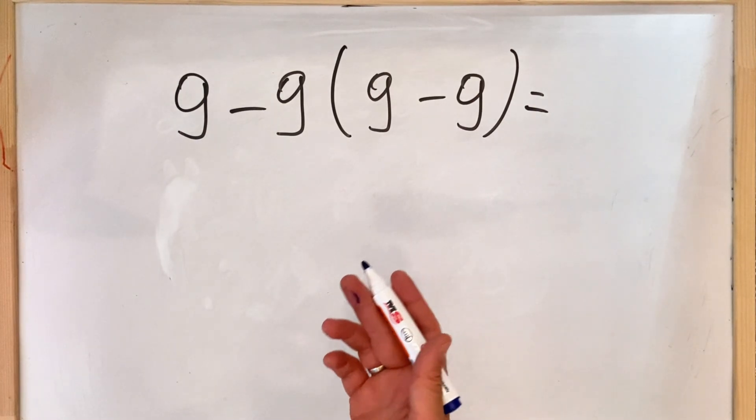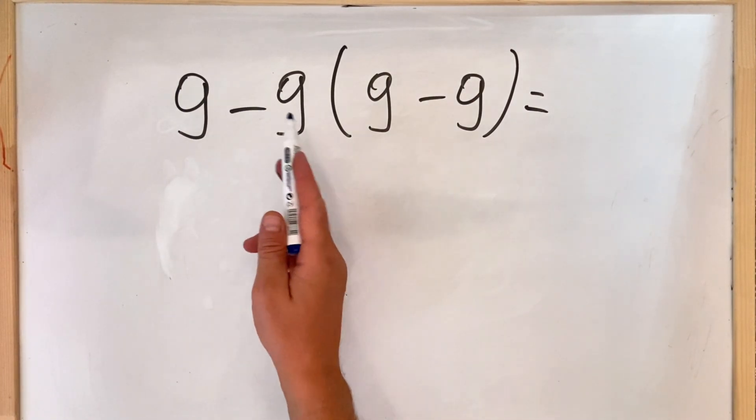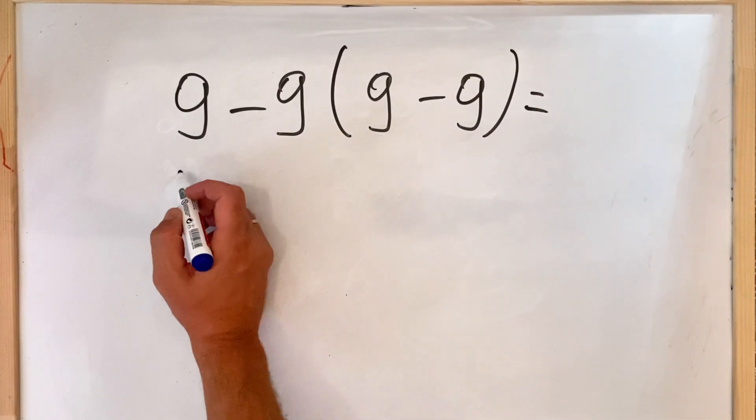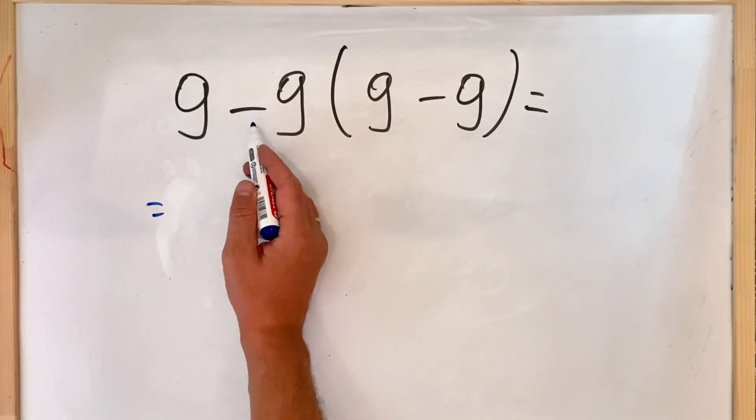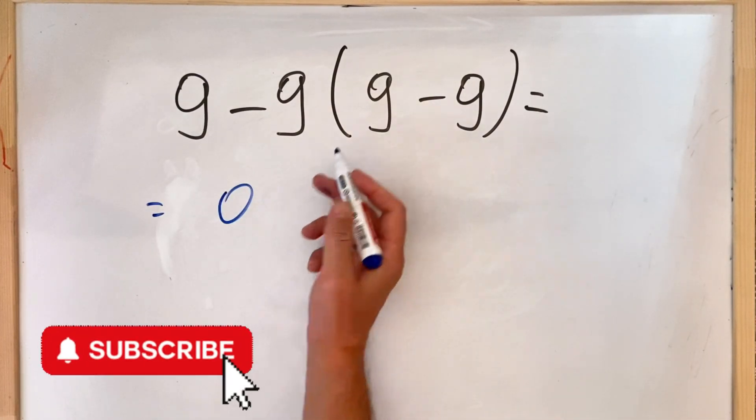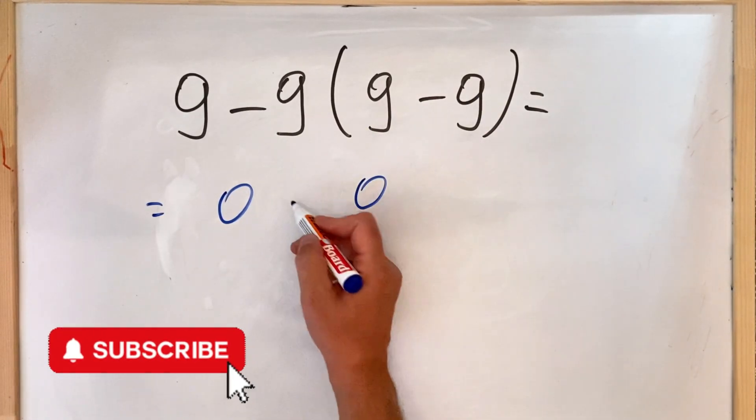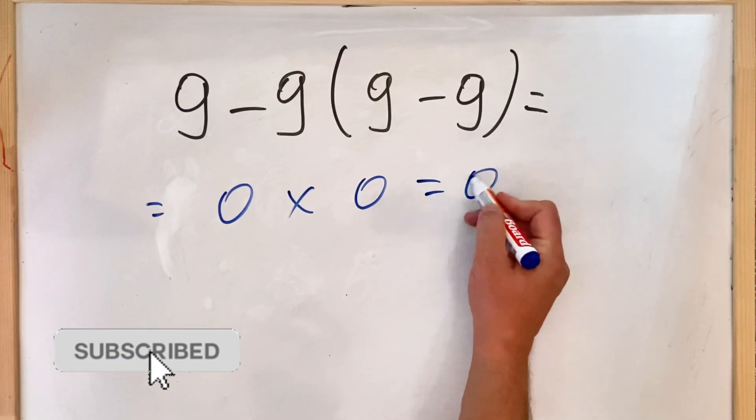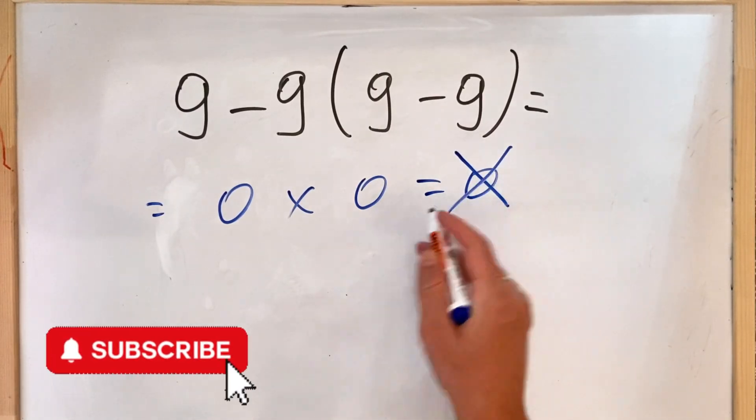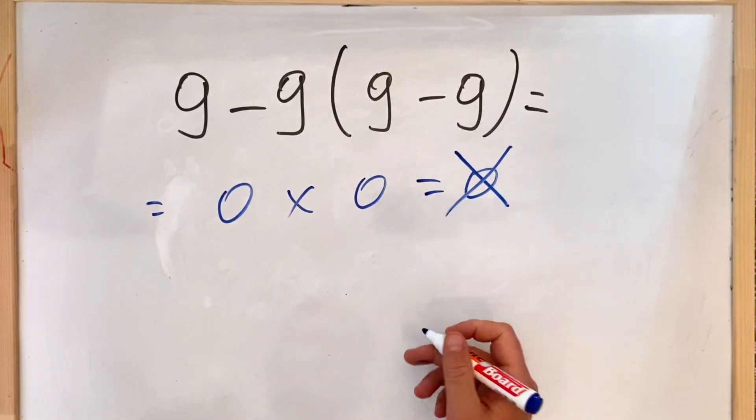Hello everyone. Many people when they see such an equation try to group the left side and the right side of the equation. So they do 9 minus 9 which equals 0, and they do 9 minus 9 which also equals 0. Then they try to do the multiplication and they get 0, but this is completely wrong.